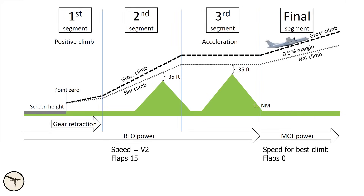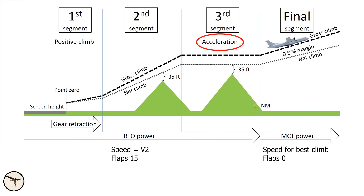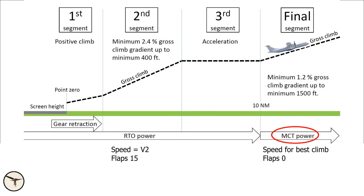If there are obstacles in the flight path, the aircraft must clear them with at least 35 feet of vertical margin, plus an additional margin equal to 0.8% of the horizontal distance travelled. Therefore, the actual climb gradient may be higher to ensure obstacle clearance. Upon reaching the acceleration altitude, we level off and accelerate to the best angle of climb speed, indicated by the white bug on the airspeed indicator. Once that speed is reached, we set MCT, Maximum Continuous Thrust, retract the flaps, and resume climbing while maintaining white bug speed. From this point, the aircraft must achieve a minimum climb gradient of 1.2%, up to at least 1500 feet above airport elevation. Acceleration altitude must be no lower than 400 feet above the departure airport elevation, and must also allow the aircraft to maintain level flight out to 10 nautical miles from the end of the runway while preserving the required obstacle clearance.